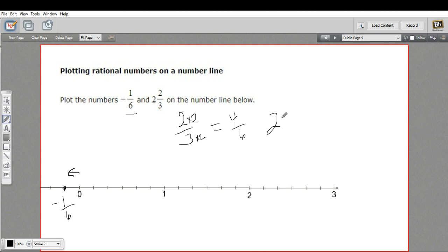So I can work on plotting the point 2 and 4 sixths. I'll start at 2 and then count up 4 sixths. 1, 2, 3, 4. So that is the point 2 and 2 thirds.